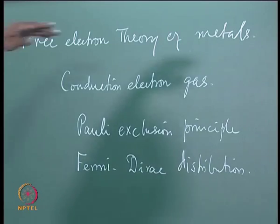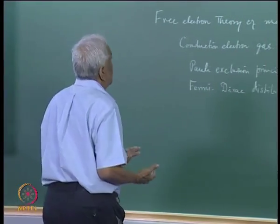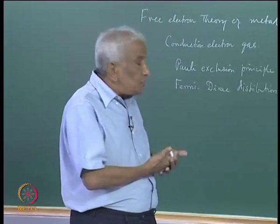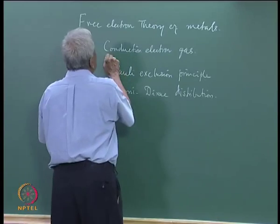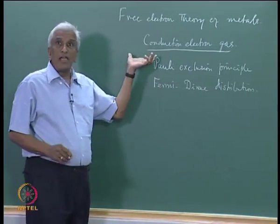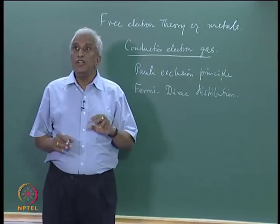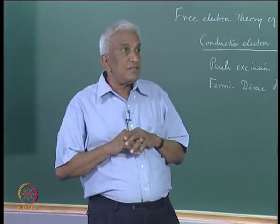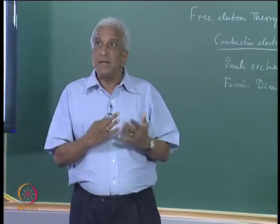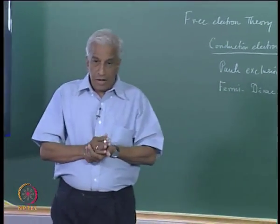Even though the metal is a crystalline solid, it is mainly the electron gas which decides the physical properties like electrical transport, heat transport, and specific heat. These properties are determined largely by the conduction electrons, though there is also a role from the ions. The conduction electrons are formed by ionization of the atoms of the metal, leaving positive ions, into which there is a free electron gas that is free to wander around within the metal.